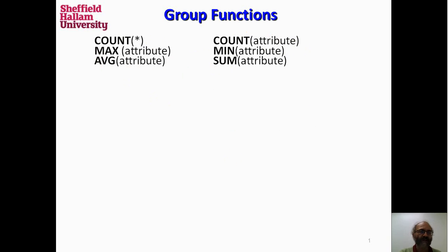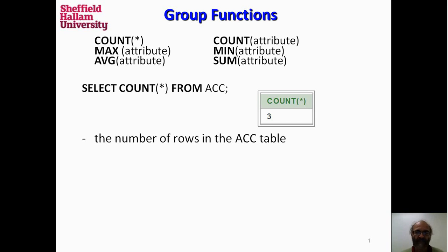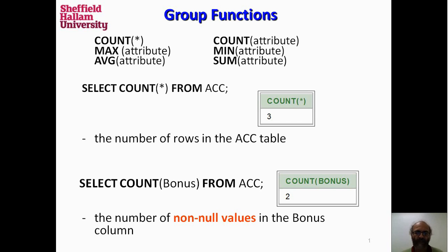So COUNT works like this. We can count all of the rows in a given table — three rows in the arc table. But we can also count the values of the bonus column in the arc table, and that counts only those values that are not null. There are three rows in this table; one of them has a null value for bonus, and the other two have non-null values.